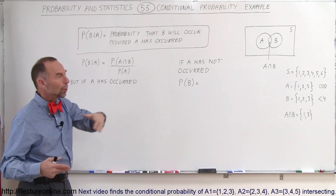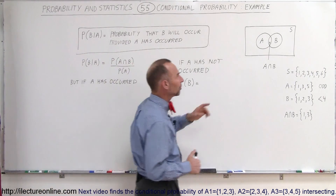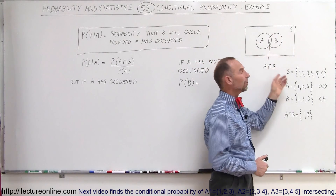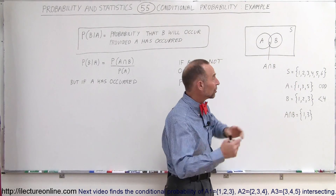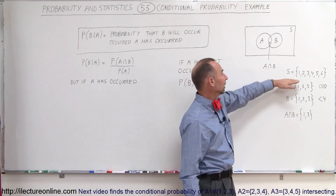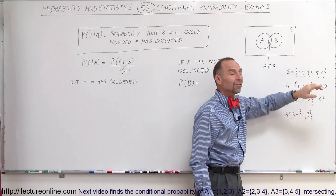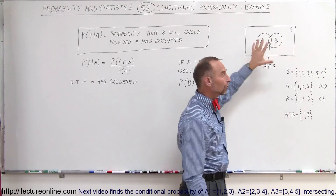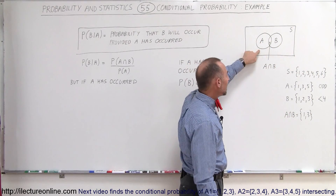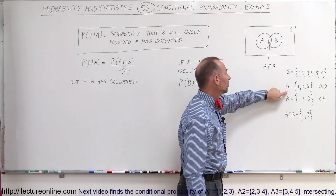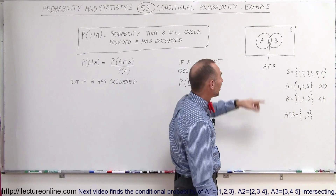What does that mean? Take a look at a particular sample space. The sample space here represents all the numbers you can toss when you have a die: 1, 2, 3, 4, 5, and 6. That's the total sample space. Event A simply means that you throw an odd number — 1, 3, or 5.